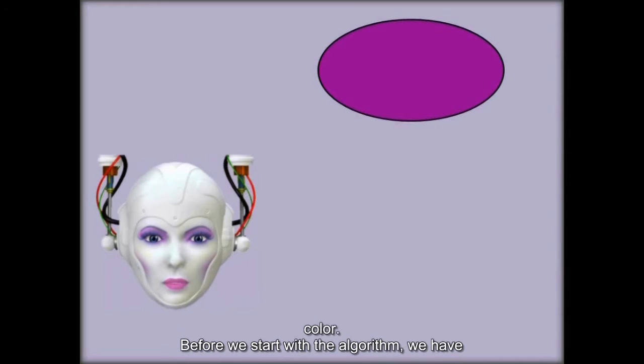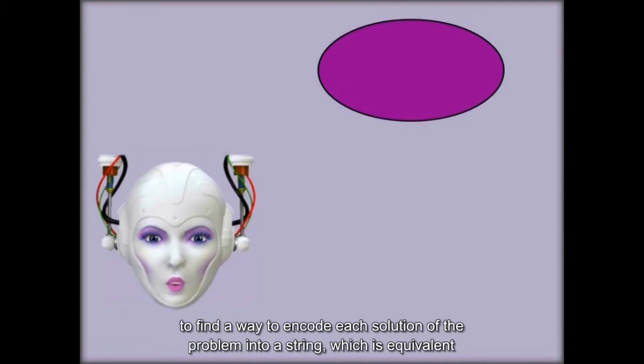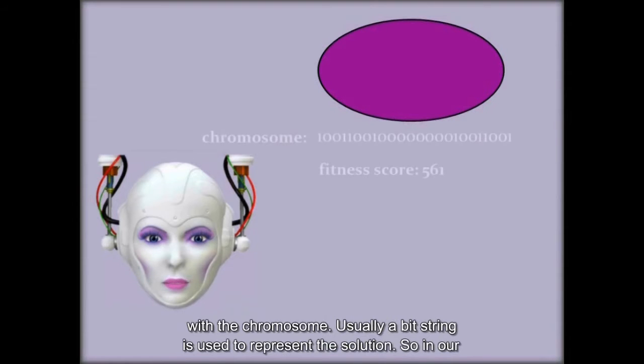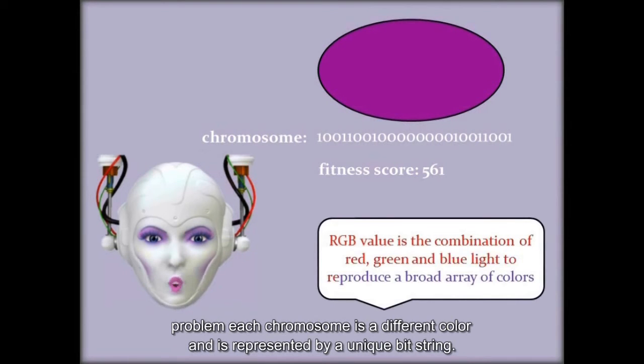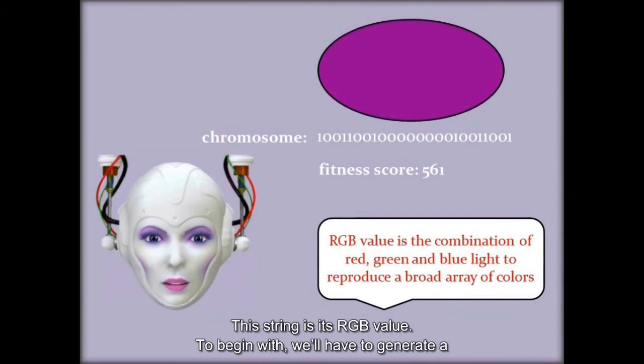Before we start with the algorithm, we have to find a way to encode each solution of the problem into a string, which is equivalent with a chromosome. Usually a bit string is used to represent the solution. So in our problem each chromosome is a different color and is represented by a unique bit string. This string is its RGB value.